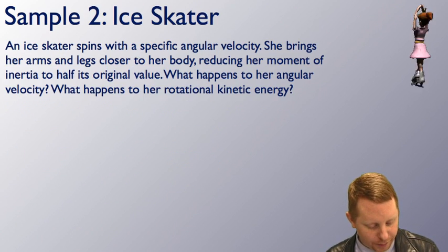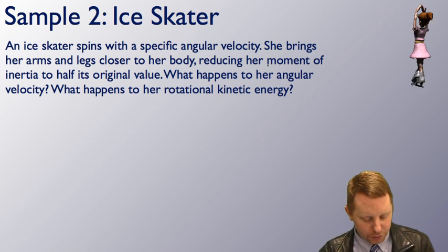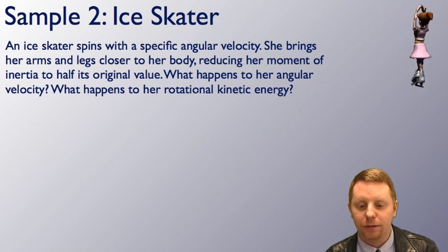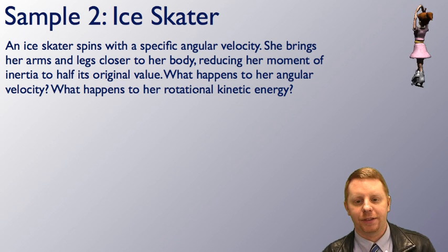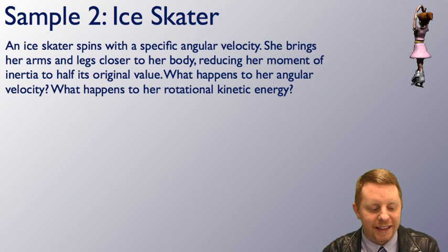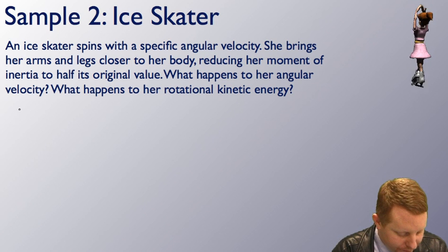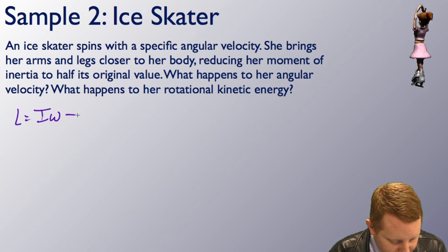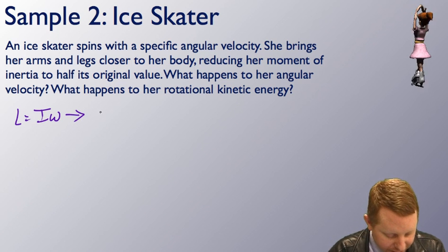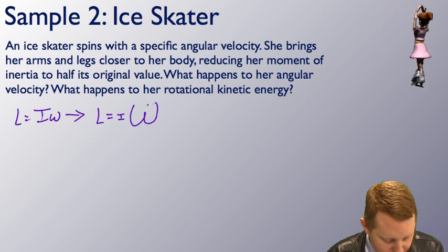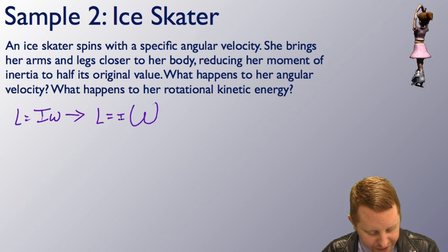Let's look at an ice skater problem. An ice skater spins with a specific angular velocity. She brings her arms and legs closer to her body, reducing her moment of inertia to half its original value. What happens to her angular velocity? As she pulls her arms and legs in, the moment of inertia I decreases. Angular momentum must remain constant because there are no net external torques, and since L = Iω, if I is cut in half, omega must double.